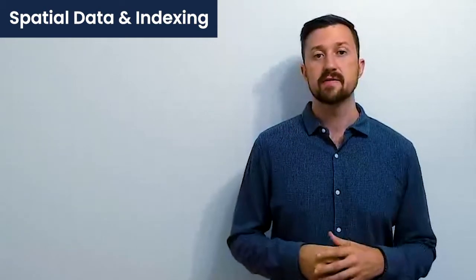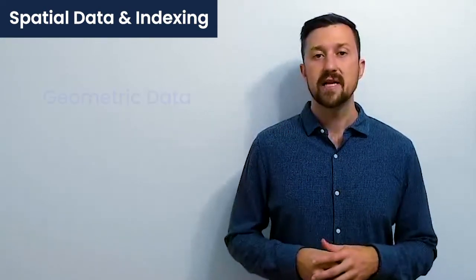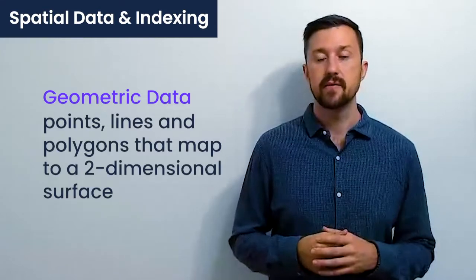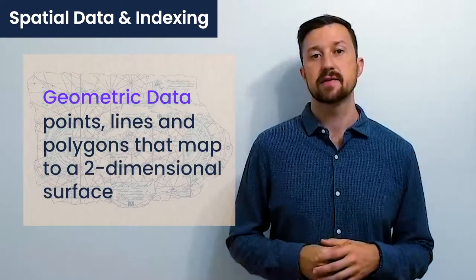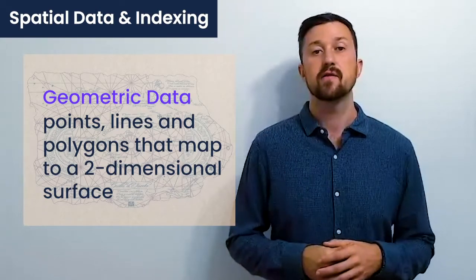The other main type of spatial data is geometric data. Geometric data is also points, lines, and polygons, but it's mapped on a two-dimensional flat surface. So a good example of this might be the floor plan of a building.